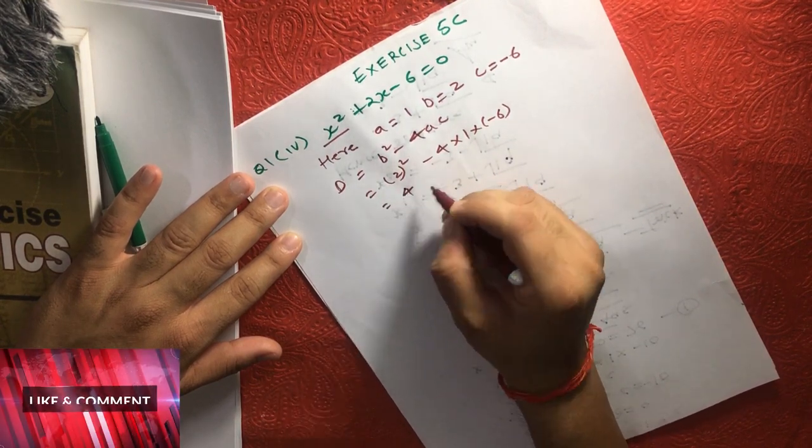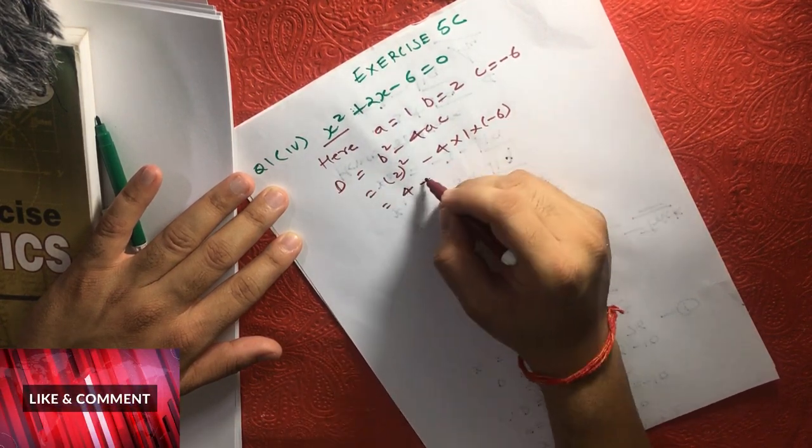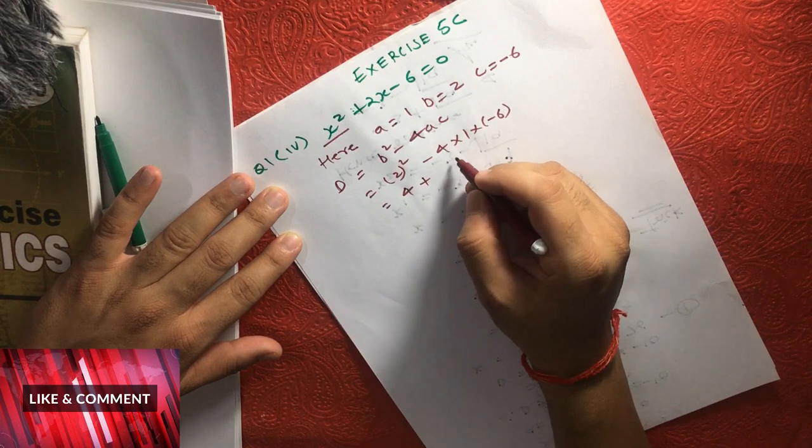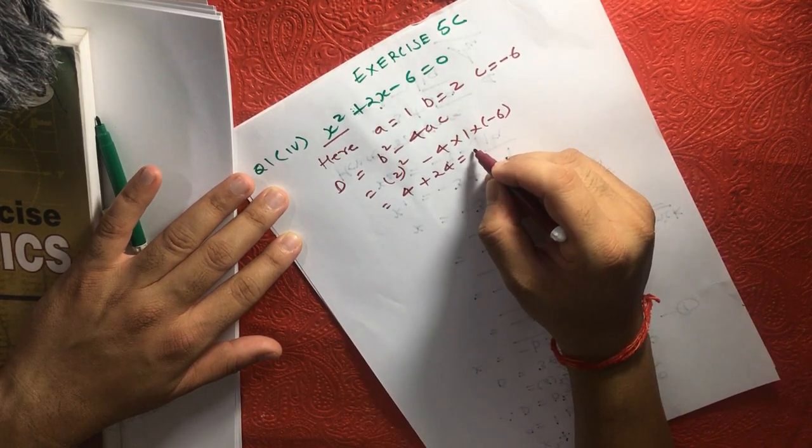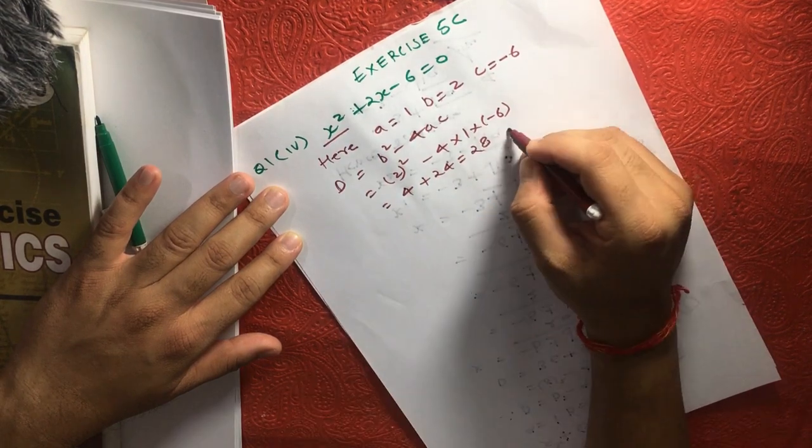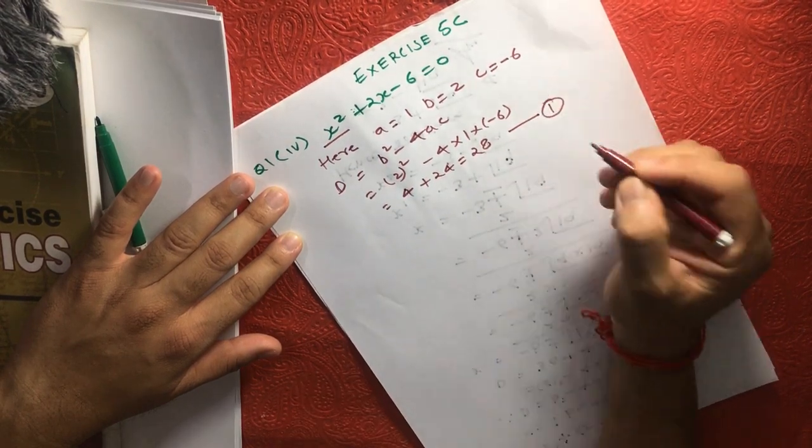So this will become 4 minus, and minus this will become plus, and 4 times 6 is 24, and this will become 28. This is your equation number 1.